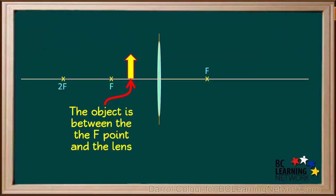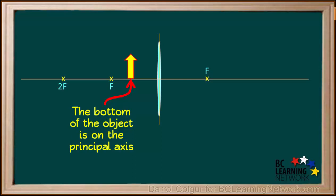Here's a diagram showing the location of the object between the focal point and the lens. We'll use a yellow arrow for the object. We've drawn this object so that the bottom of the object is sitting on the principal axis.